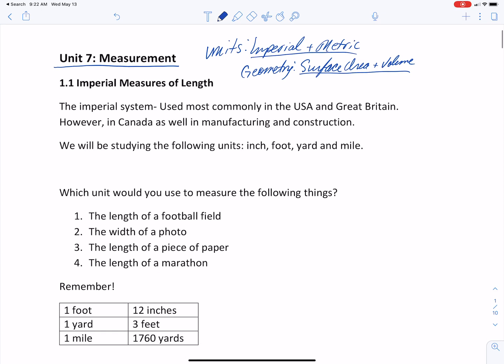So the first lesson is on imperial measures. The imperial system is most used in the U.S. and in Great Britain. However, in Canada, we also talk about, for example, our height. We talk about our height in feet and inches versus centimeters. So in Canada, we have kind of a hybrid. Anyway, the units that we'll be looking at are the inch, the foot, the yard, and the mile. And there are the abbreviated versions for you.